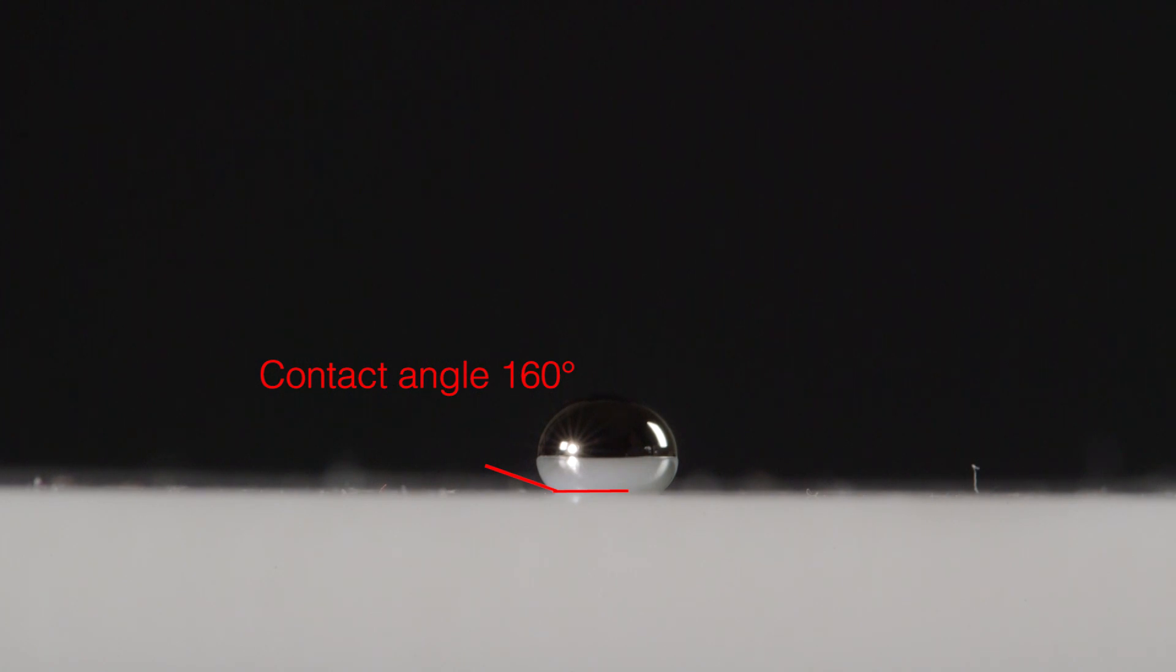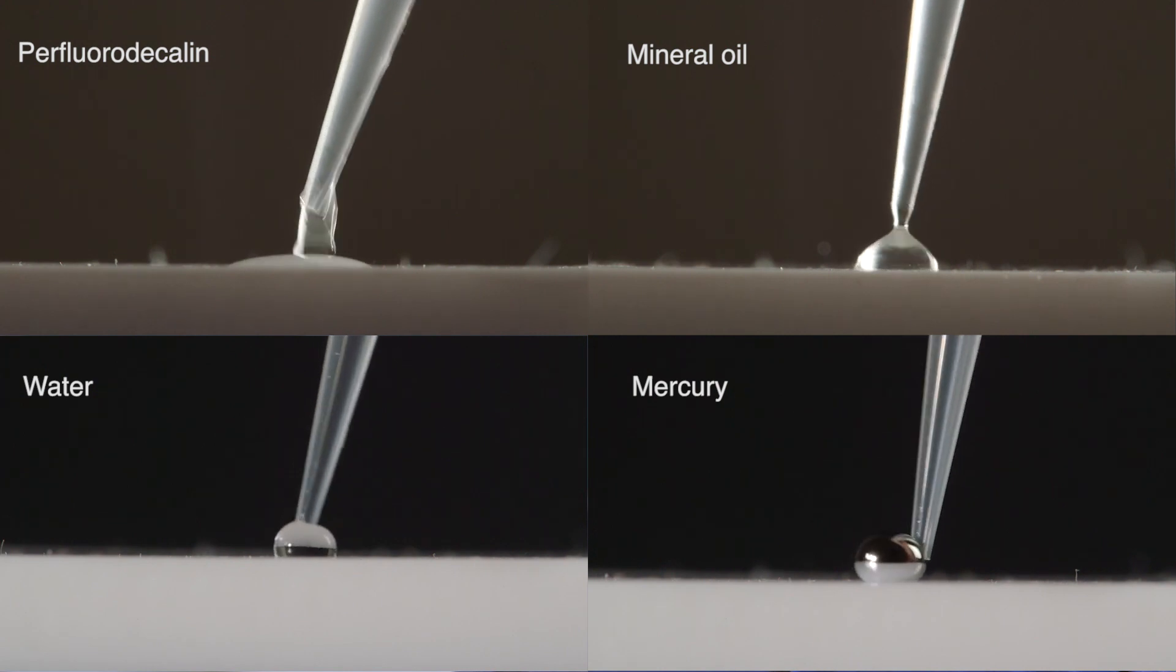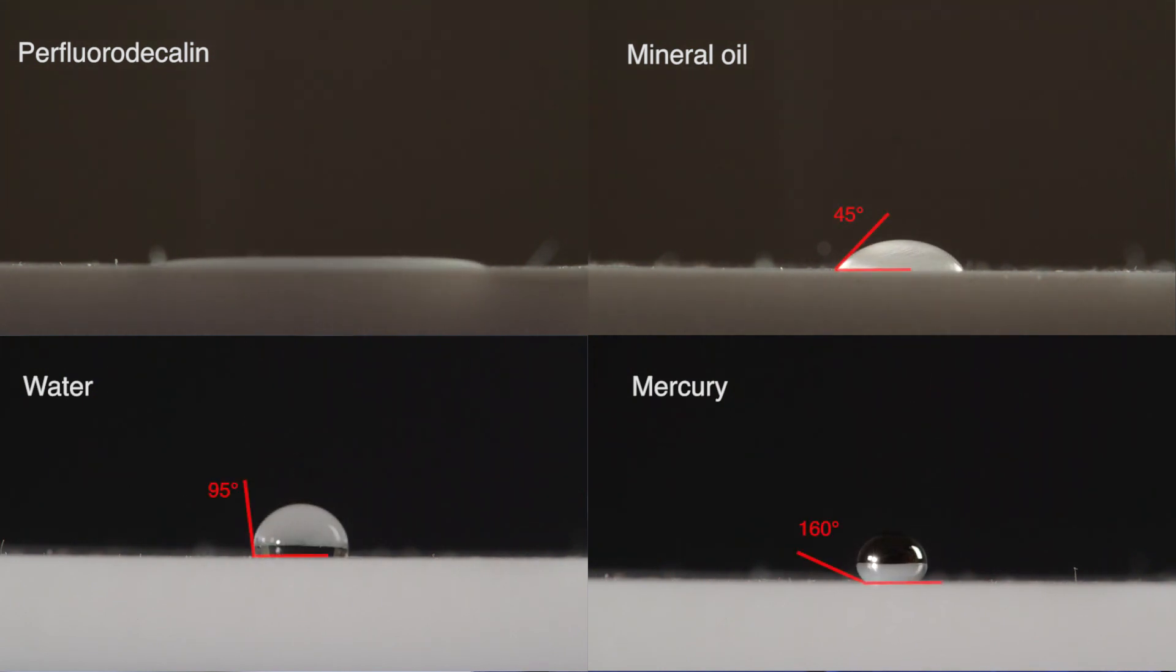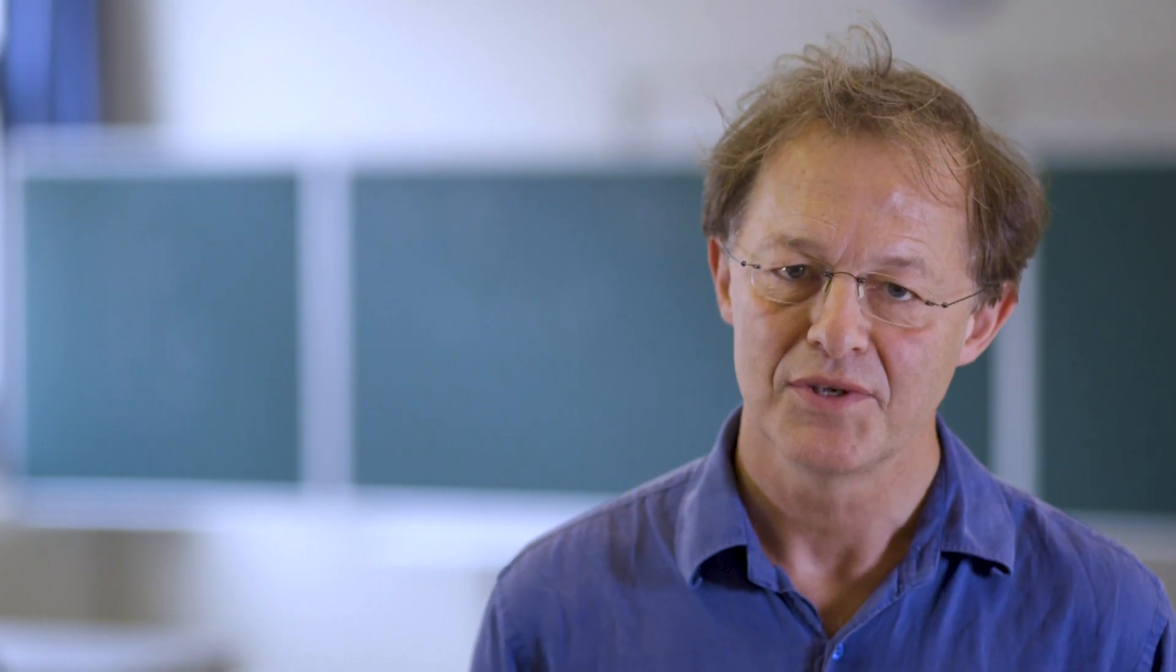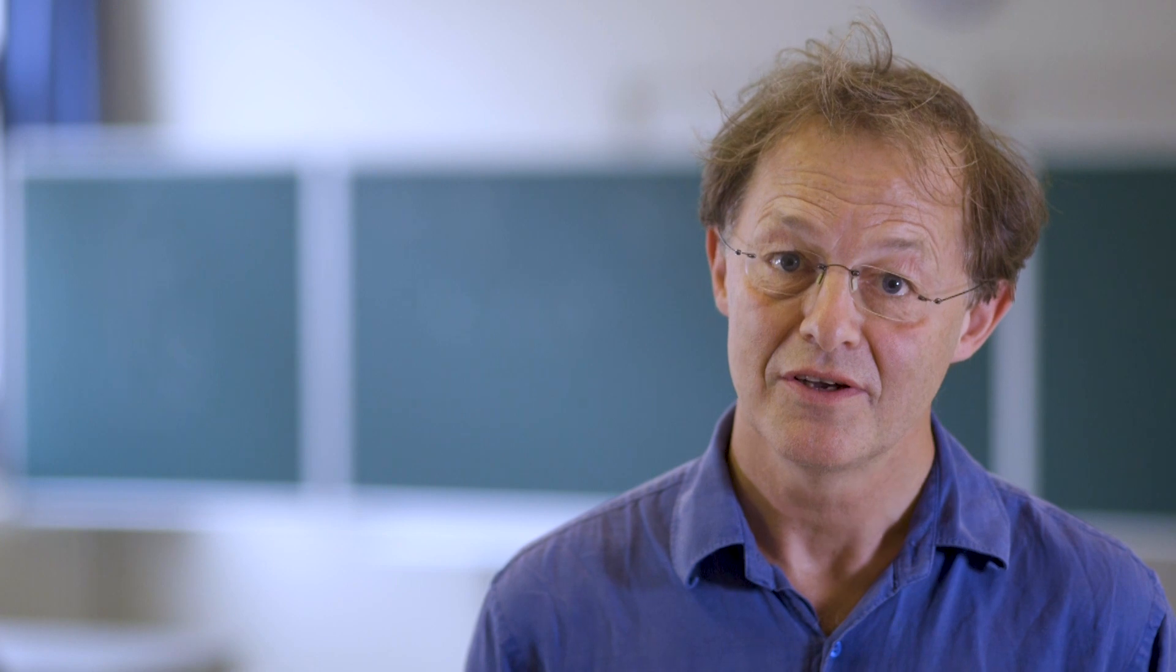The observation of multiple configurations for the deposited drops arises from the fact that we have three kinds of interfaces in a wetting situation: that between the solid and the liquid, that between the solid and the air, and that between the liquid and the air.